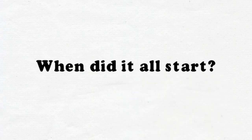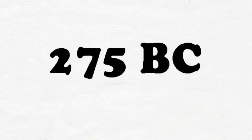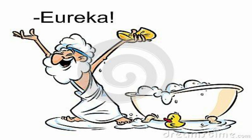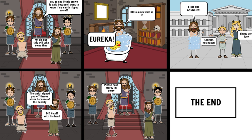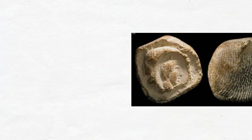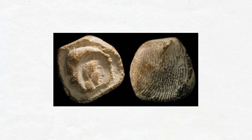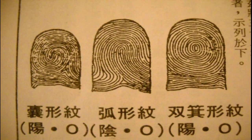The history of forensic science dates back thousands of years. In 275 BC, King Syracus approached Archimedes to test the authenticity of a gold crown. Archimedes proved that the crown was fake by comparing the buoyancy and density of the submitted crown with an original one. In the 700s, people in China were using fingerprints to establish the identities of documents and clay sculptures.